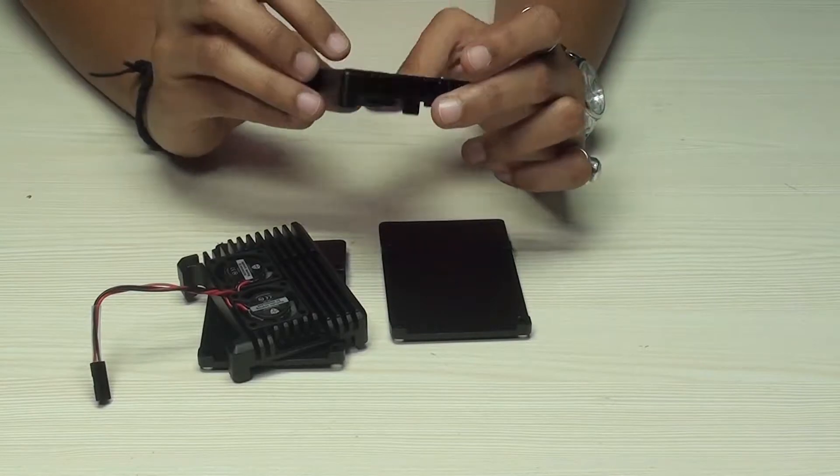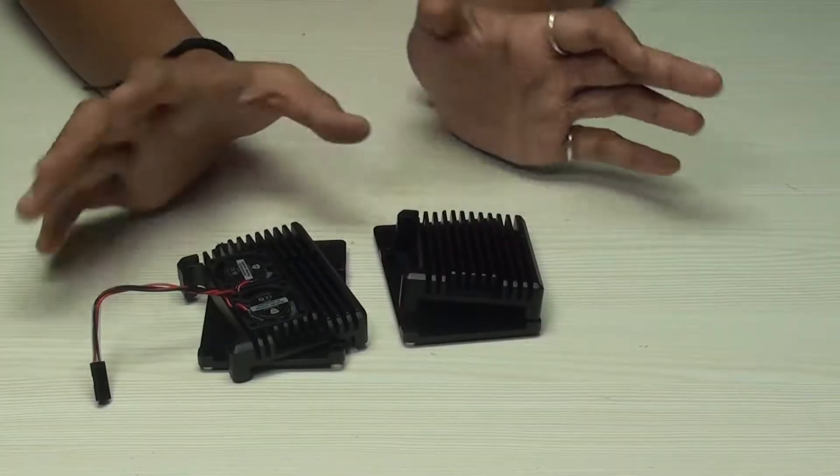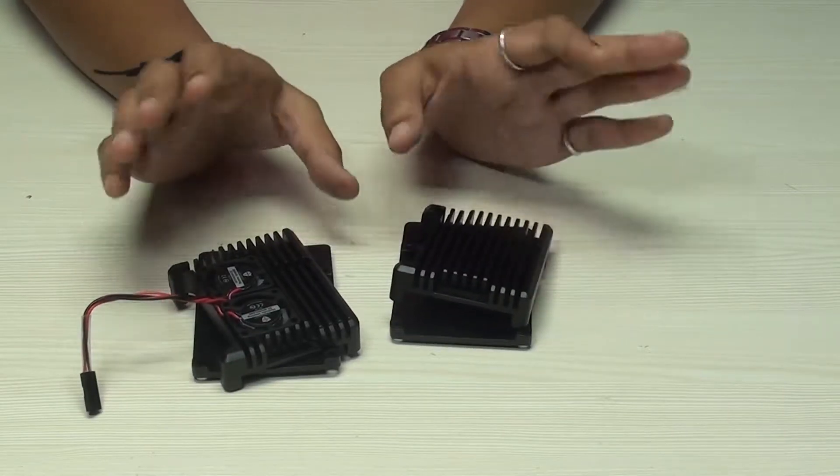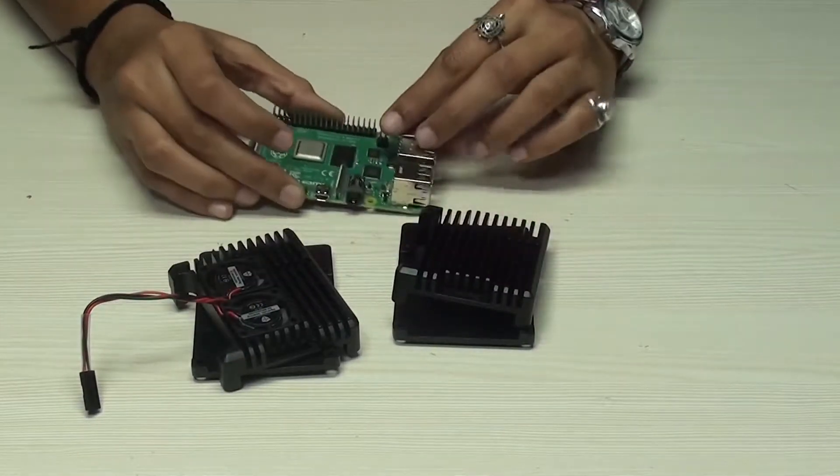As the design is open-cased, it does not affect the Wi-Fi signal. Also, the aluminum material is light in weight. Now we'll see how to install this heatsink casing with Raspberry Pi 4 Model B.